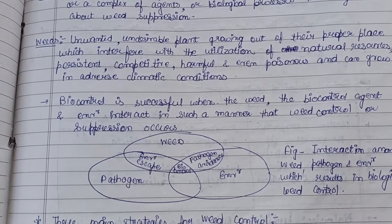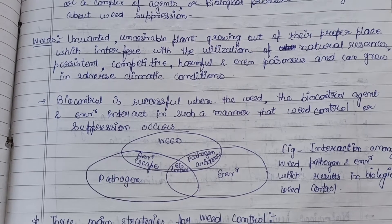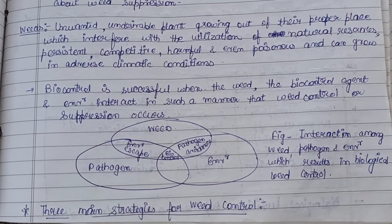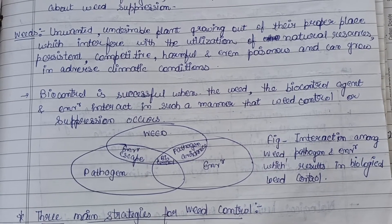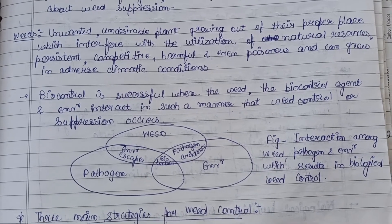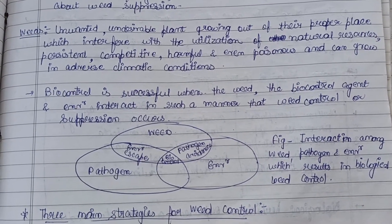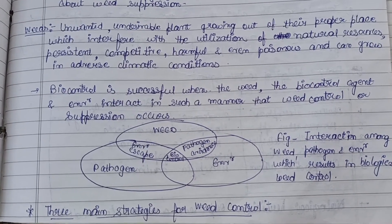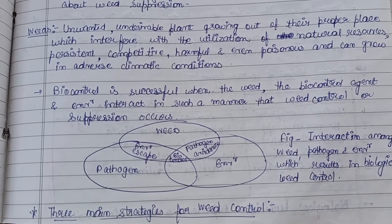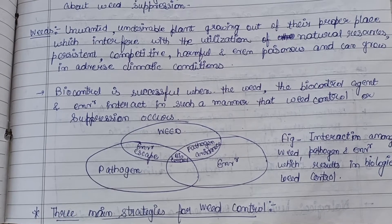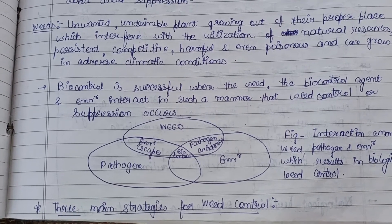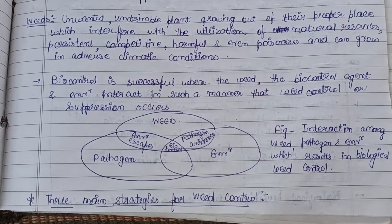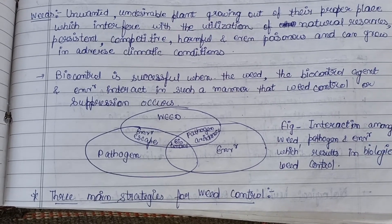Bio-control is successful when the weed, the bio-control agent (the microorganism), and the environment interact in such a manner that weed control or suppression occurs efficiently. This is illustrated by a diagram representing the interaction among the weed, pathogen, and the environment, which results in biological weed control.